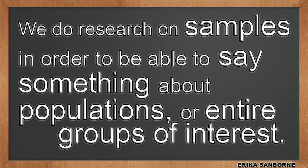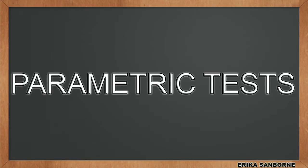We do research on samples in order to be able to say something about populations, which are entire groups of interest. In most other statistical tests, other than the chi-square, we look at sample means and sample variance and use those statistics to make inferences about population means. That little letter mu is pretty much always in the hypothesis some way.